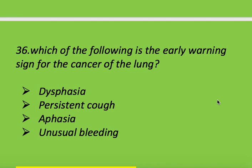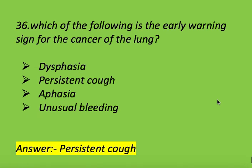Next question: which of the following is the early warning sign for cancer of the lungs? Options: dyspnea, persistent cough, aphasia, and unusual bleeding. Right answer is persistent cough. Persistent cough is the early warning sign for cancer of the lungs.